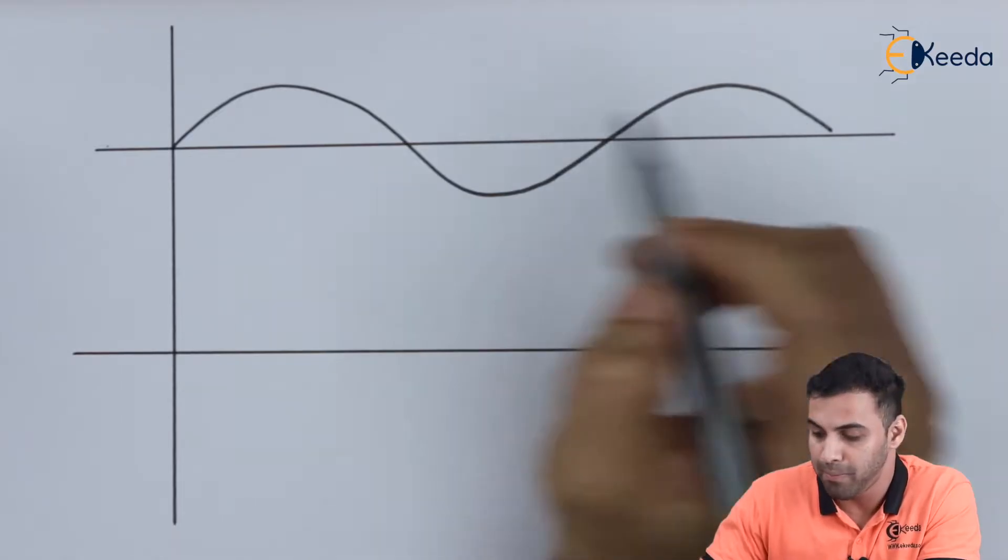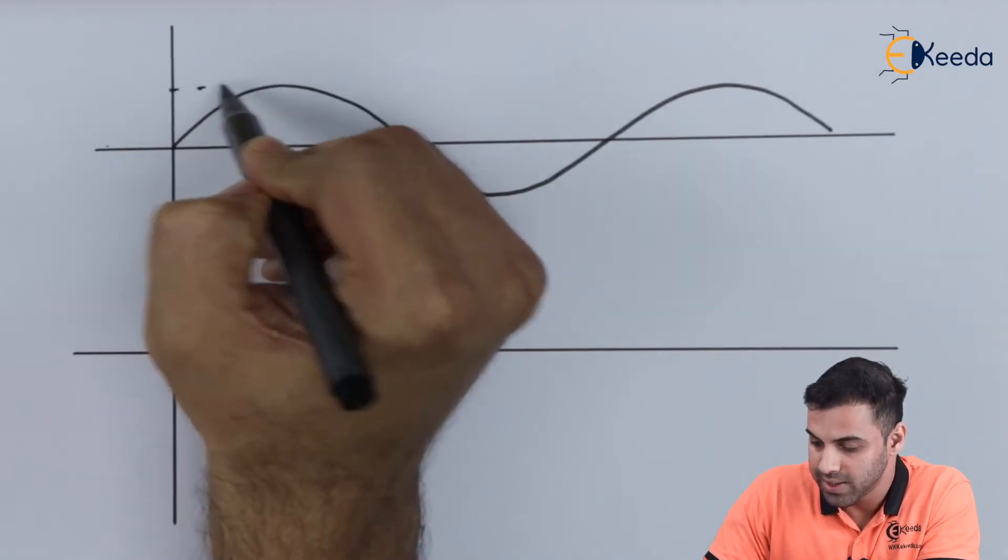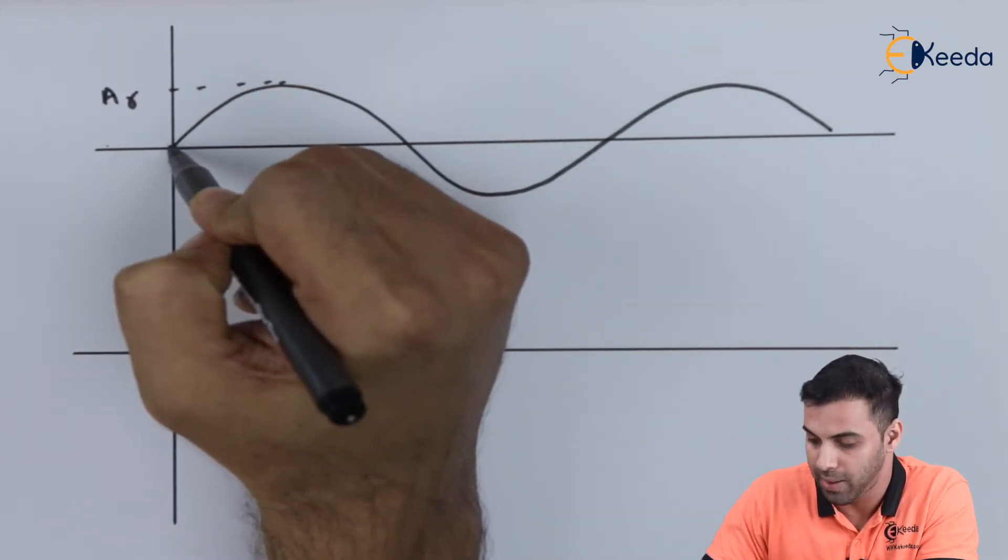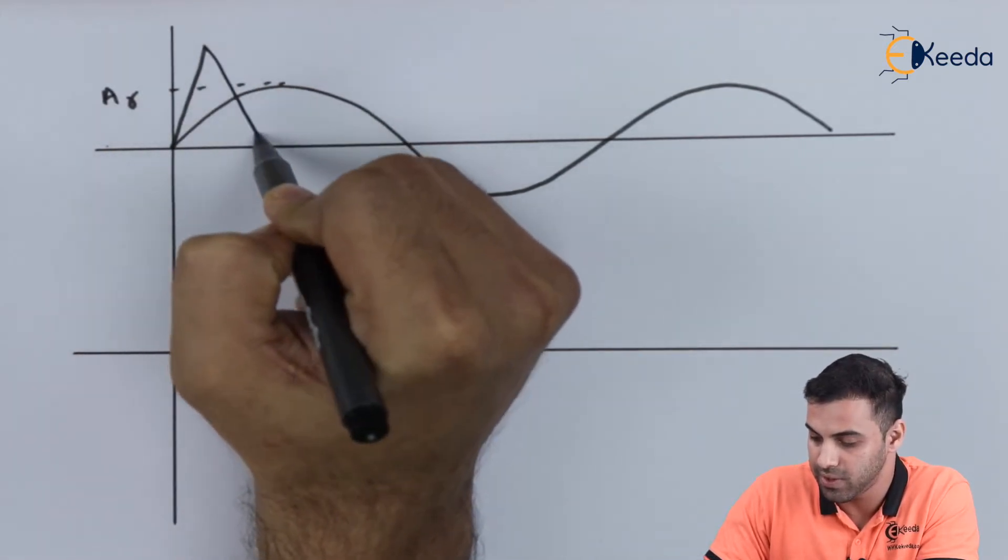Now if we put, say this is AR, now I am going to draw the triangular wave.